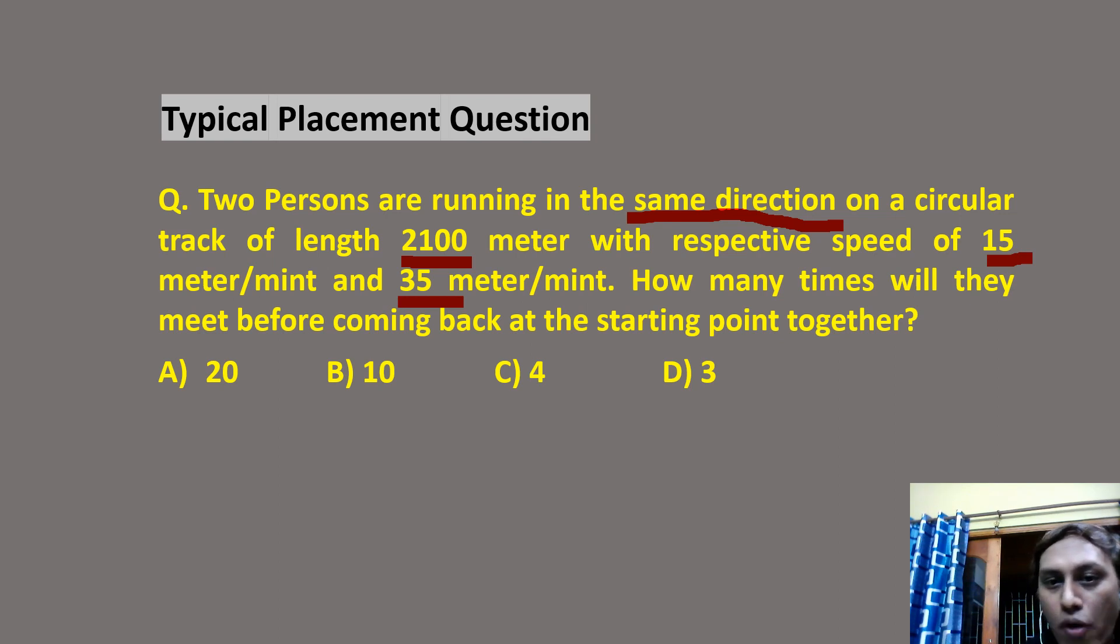So here the key points are they are moving in same direction, their speeds are 15 and 35, and the track length is 2100 meter.